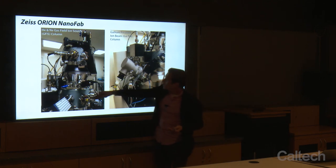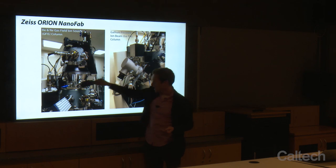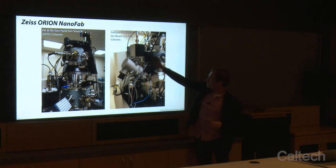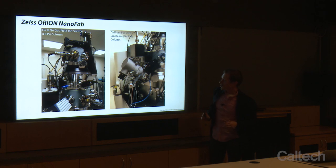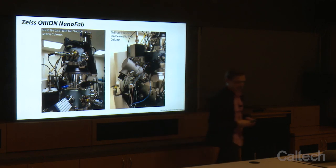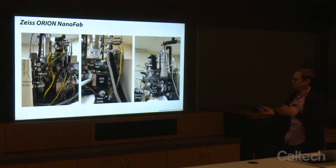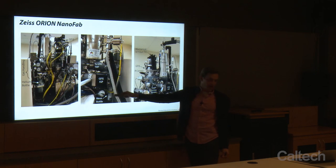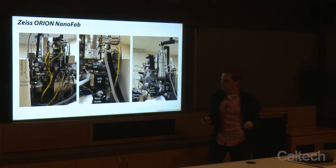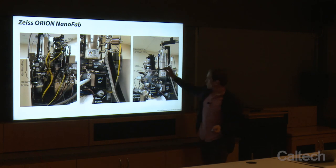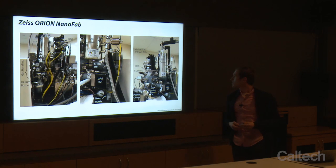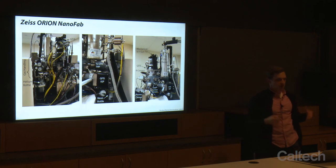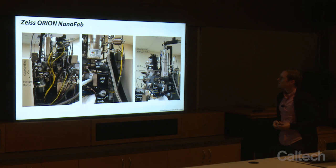You can see an array of ion getter pumps used to pump the system. There's a bottle of helium gas on one side and a bottle of neon gas on the other. Depending on which beam species we want, we turn on that gas and it flows up into the source, where it gets ionized to form a beam. Importantly, we have a liquid nitrogen Dewar — I'll mention later why we want cryogenic temperatures in order to form these helium and neon ion beams.